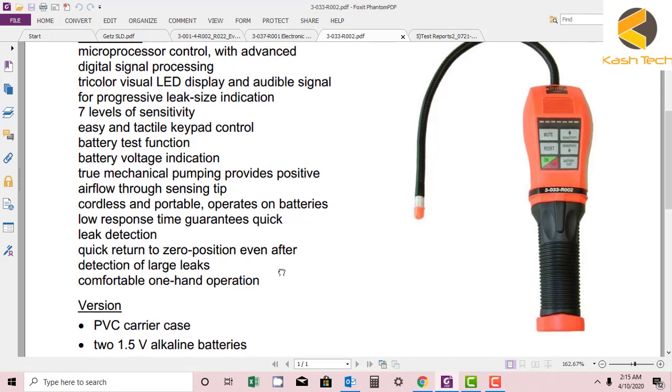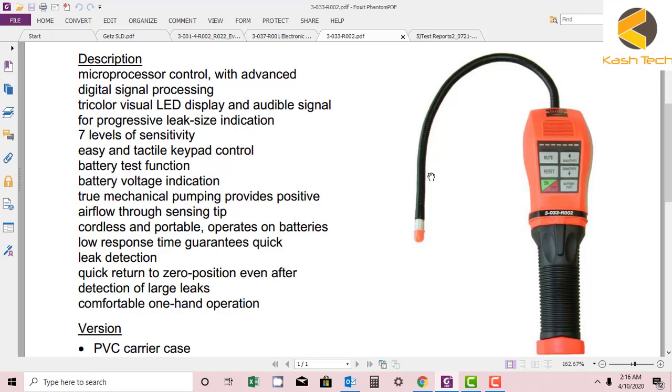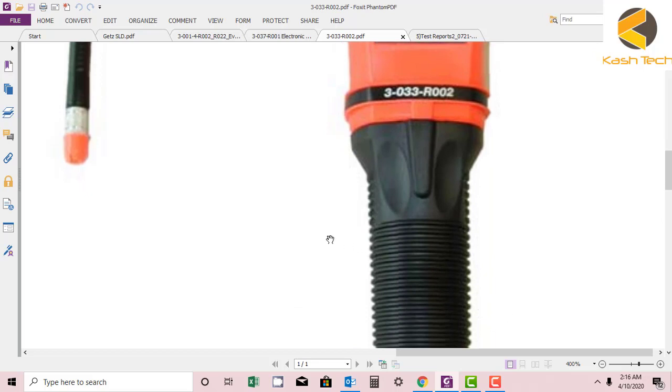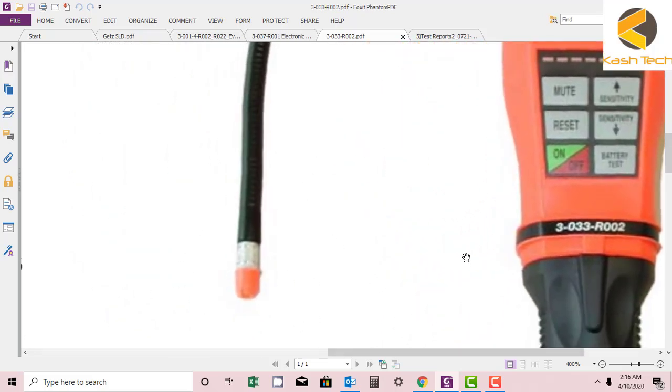The leak detector looks like this. You can see in the diagram—let me zoom in. This is how it's looking. Here you can grip, and this end you can use to detect some leakage.